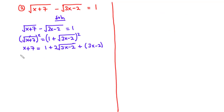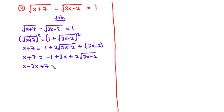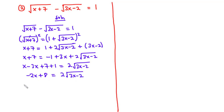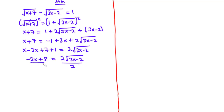Let's simplify: x plus 7 equals 1 minus 2, which is negative 1, plus 3x plus 2 times the square root of 3x minus 2. Transposing negative 1 plus 3x to the left-hand side gives x minus 3x plus 7 plus 1 equals 2 times the square root of 3x minus 2. This becomes negative 2x plus 8 equals 2 times the square root of 3x minus 2. Dividing through by 2: negative x plus 4 equals the square root of 3x minus 2.